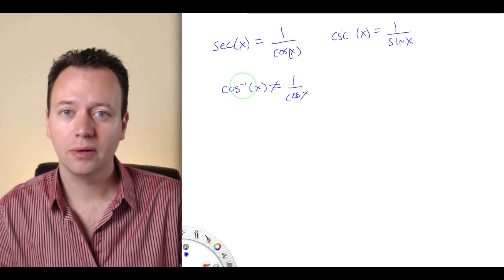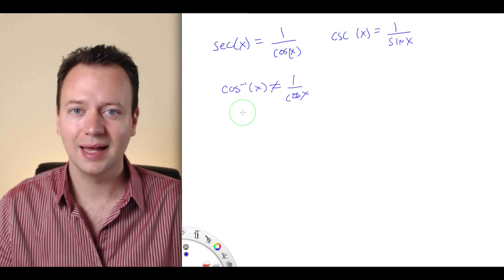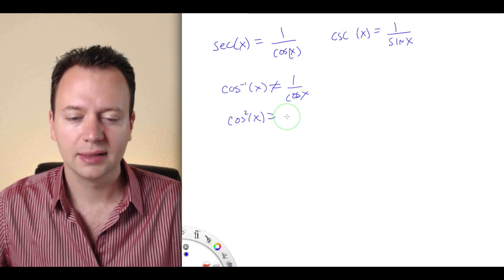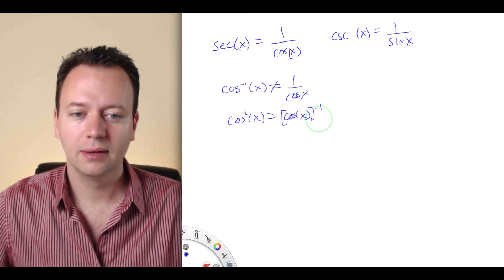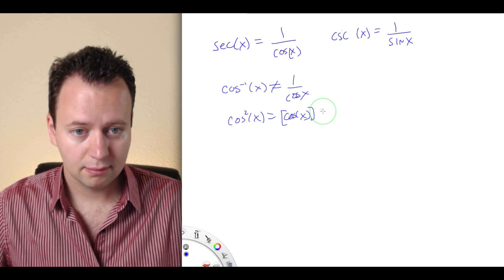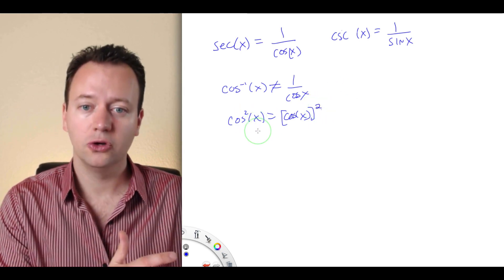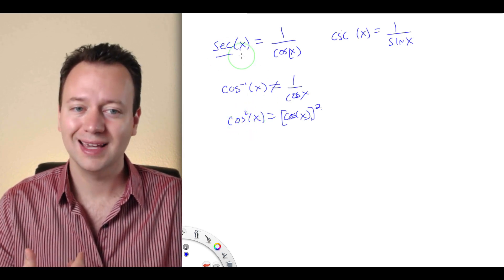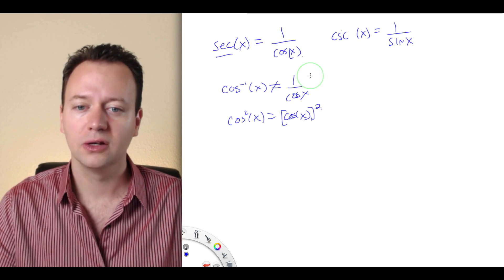For any superscript other than minus 1, it does represent cosine of x to that power. For example, cosine squared of x represents cosine of x quantity squared, and cosine cubed x is cosine of x quantity cubed. However, for negative powers, instead of using cosine we use secant, and instead of sine we use cosecant. So secant of x already represents cosine of x to the minus 1.